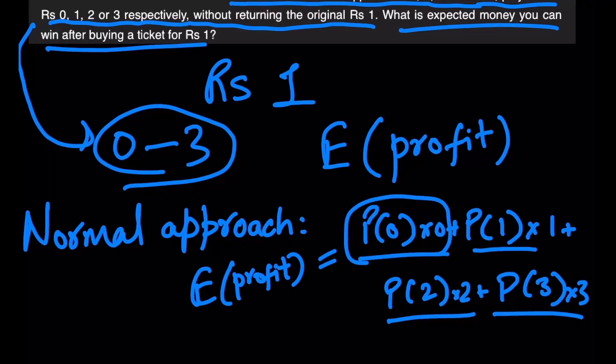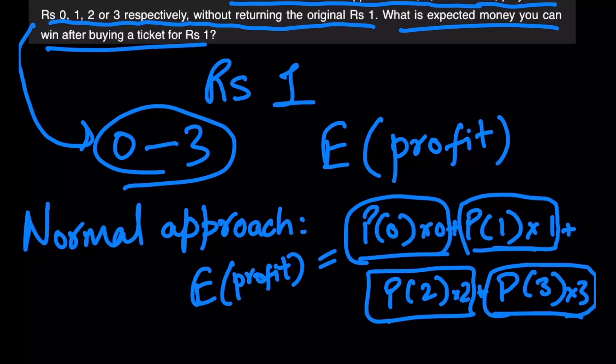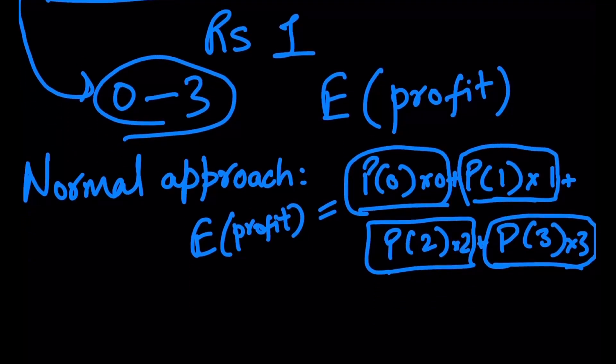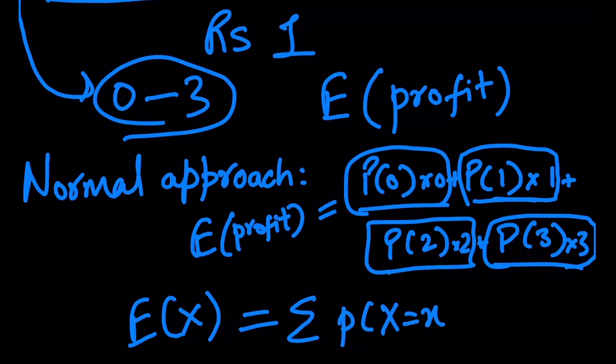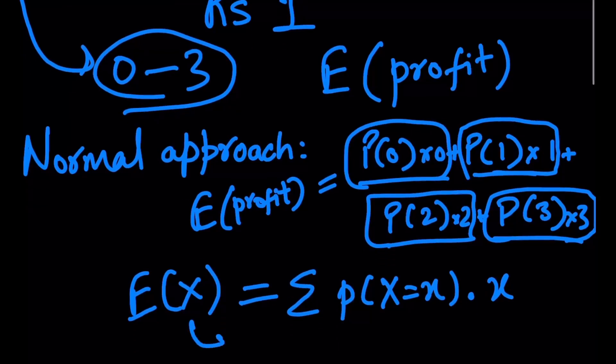So this is the standard expected profit formula, right, where we're basically using the formula E of X is the summation of P of X equals to small x into x, where small x is basically all the values that the random variable capital X can take up.